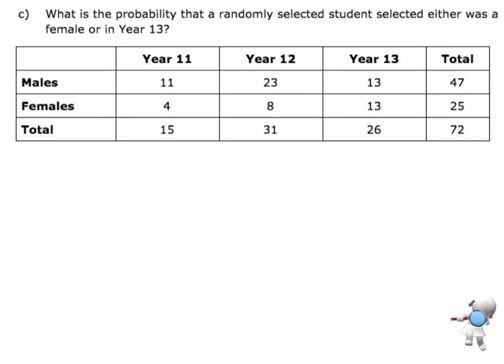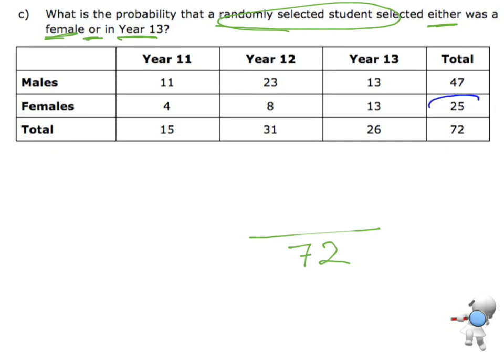What's the probability that a randomly selected student — so again, out of the total — either was female or in Year 13? I know I'm dividing by 72. It could either be female or in Year 13. So let's think: I've got 25 females, and 26 people that are in Year 13.